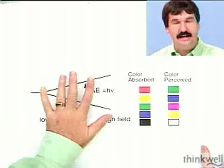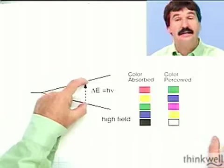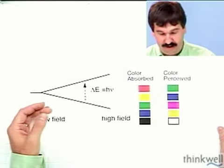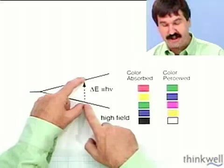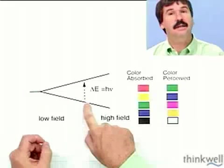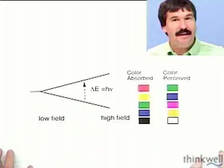But why does it change? And where does that separation actually come from? Because we had this kind of primitive picture of all the d orbitals at the same level. So something is going on. Something is causing the separation in the d orbitals to change as we change the ligands. What's happening? Stay tuned and we'll find out.